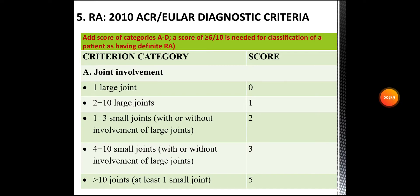Under joint involvement: if one large joint is involved, the score is zero. Two to ten large joints gives 1 point. One to three small joints, with or without involvement of large joints, gives a score of 2. Four to ten small joints, with or without large joint involvement, gives a score of 3. Greater than 10 joints, including at least one small joint, gives 5 points.